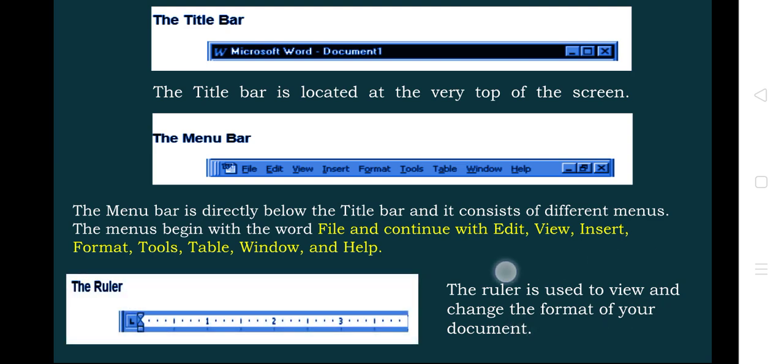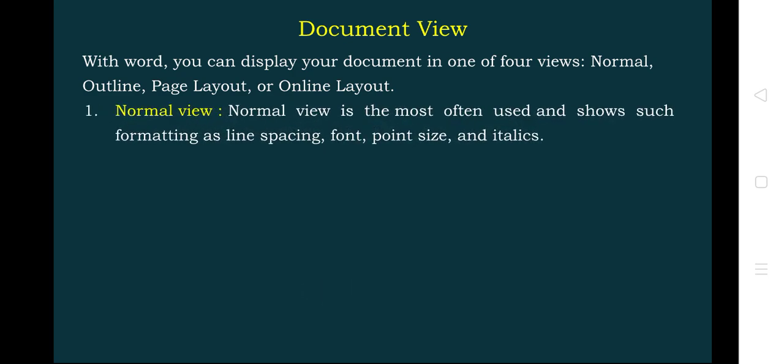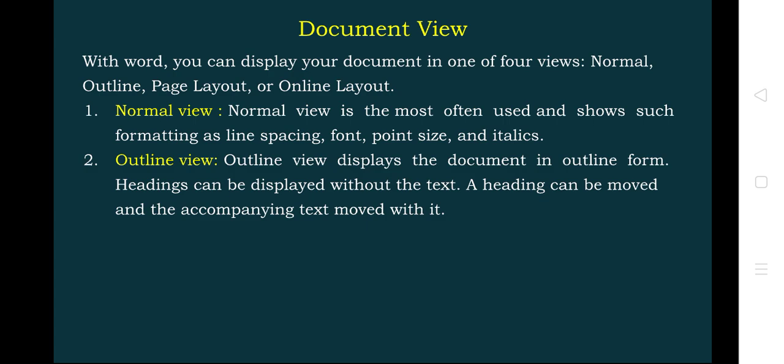The next component is document view. With Word you can display your document in one of four views: normal view, outline view, page layout, or online layout. Normal view is the most often used and shows formatting such as line spacing, font, point size, and italic. Outline view displays the document in outline form — only the headings are shown without the body text, and headings can be moved along with their accompanying text.